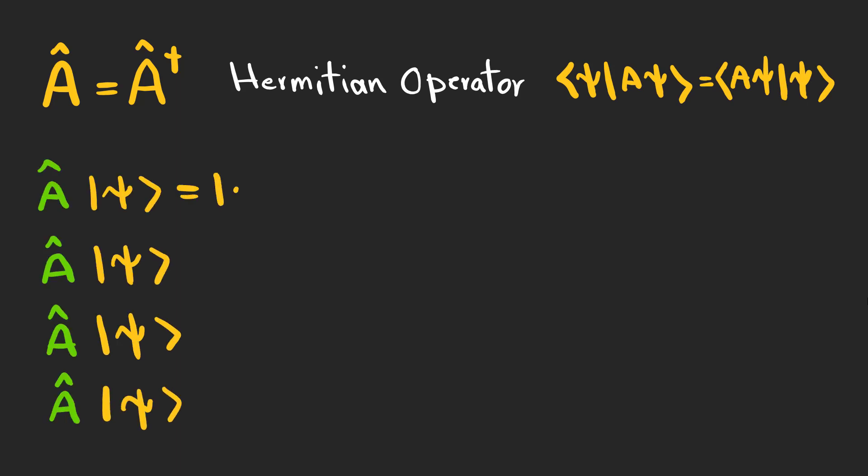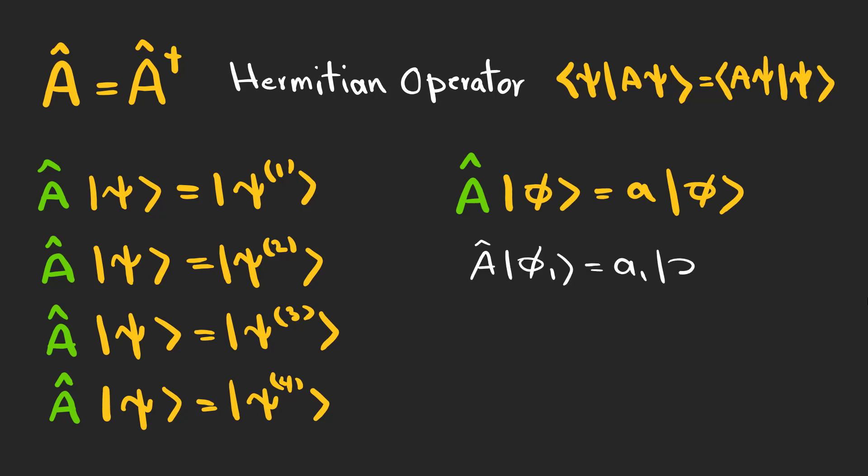The act of measurement causes the wave function to collapse, and for some identically prepared systems, the result is different. But there are some functions for which the operator always yields the same value. These values are called eigenvalues, and the functions are called eigenfunctions.